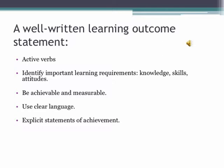A well-written learning outcome will include active verbs — it's about students doing something. It will identify the important requirements: the knowledge, skills, and attitudes we expect from the module. They need to be achievable and measurable. Sometimes we don't actually measure the learning outcomes we set out to measure, so assessment tasks need to line up properly with learning outcomes. Write outcomes in clear language so students clearly understand what is expected of them, as explicit statements of what they're expected to achieve.